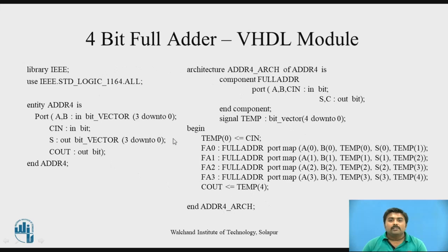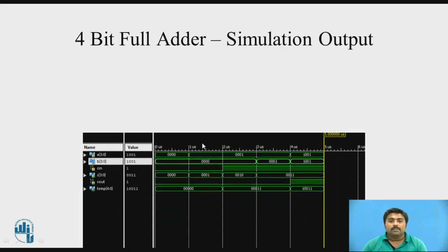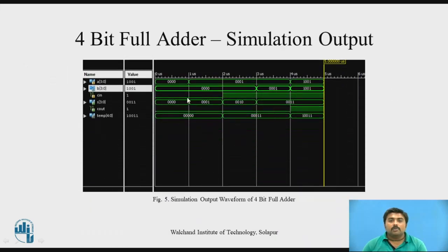Once you are done with the VHDL module, you can verify it with the help of simulation. This is the simulation output. If you see the last case, the Cout is 1 because both last bits are 1 — that carry will be generated, which is nothing but the Cout. And this is the final sum.